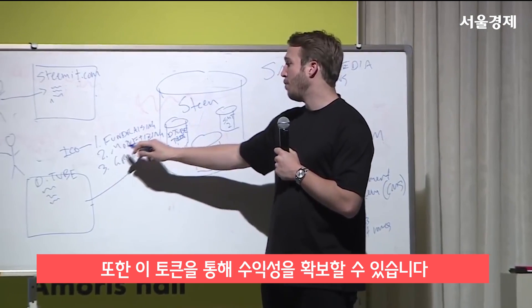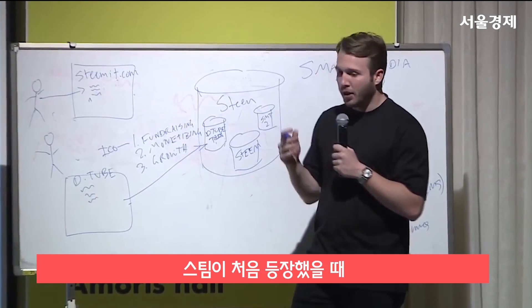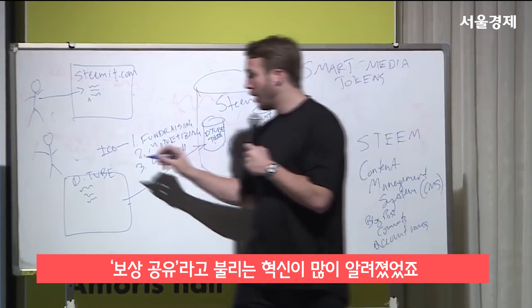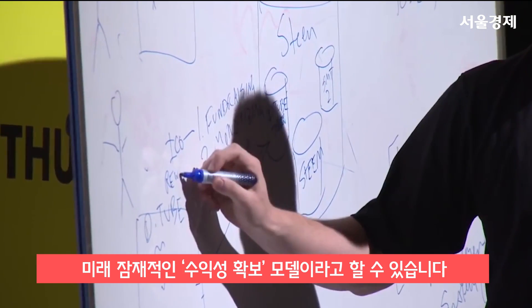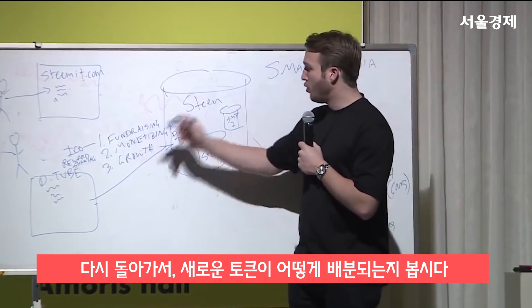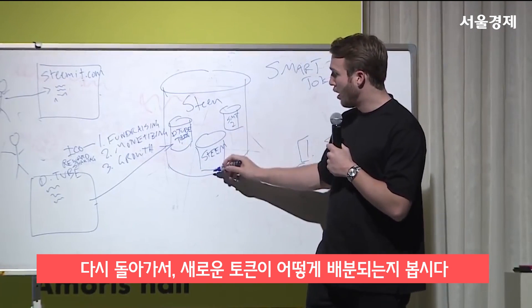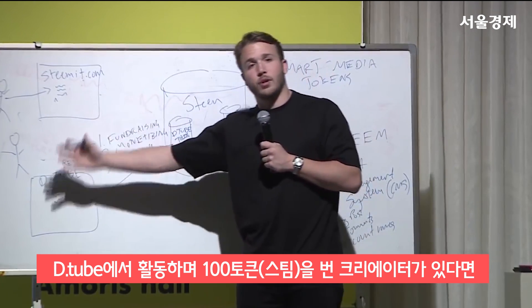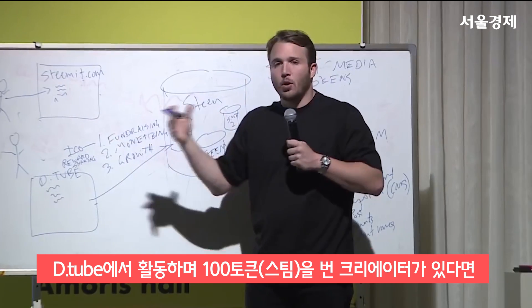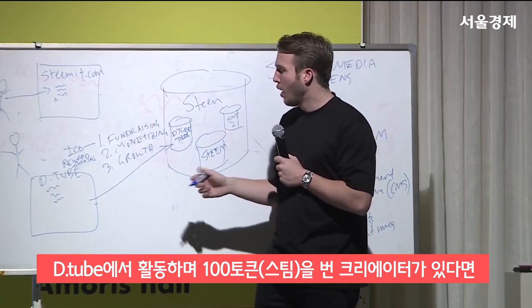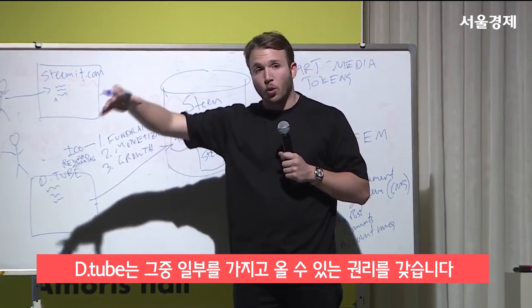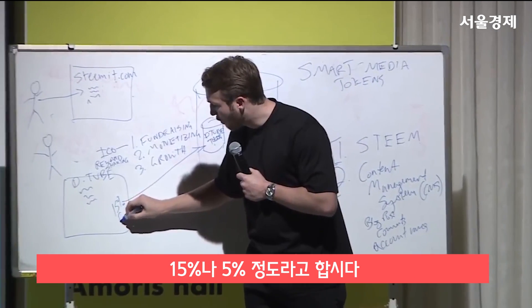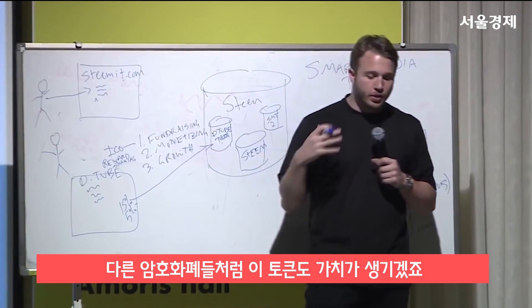We also want DTube to have the ability to monetize with this token. The advent of Steem has brought about an innovation called reward sharing, potentially a monetization model of the future. If we think back to how new tokens are constantly distributed, we can think that if the creators behind DTube earn 100 tokens or 100 Steem, DTube would have the right to take a percentage of those tokens — maybe 15% or 5% of all tokens coming through.